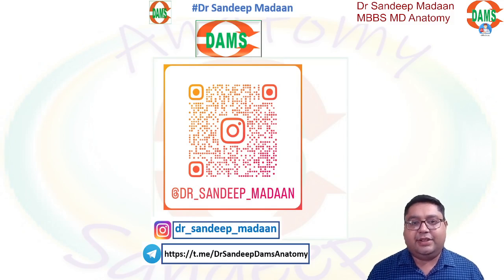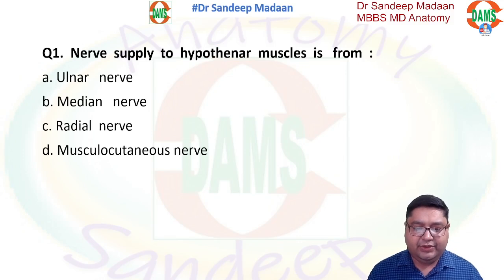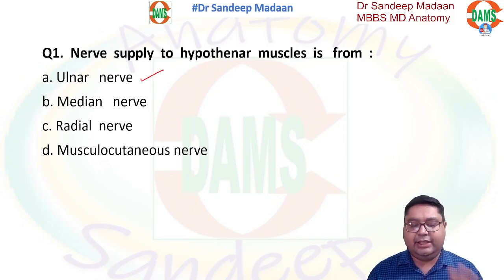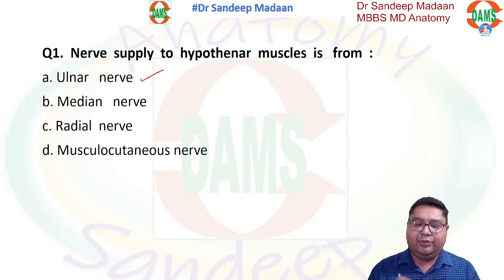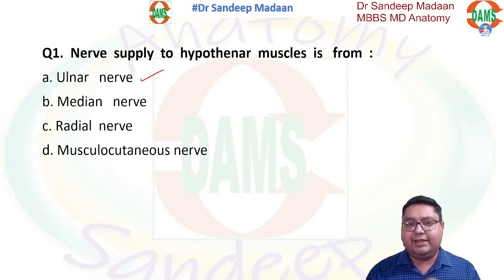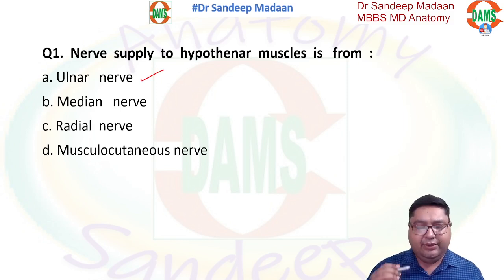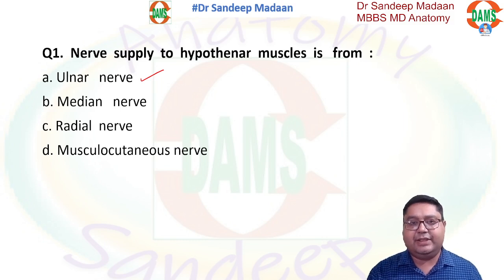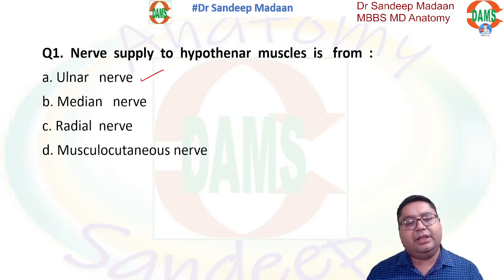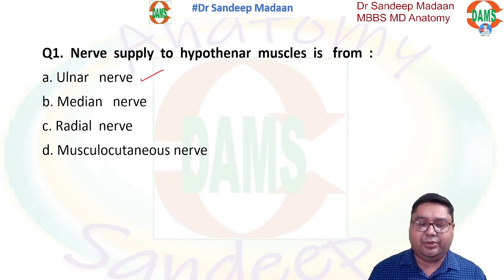Hello everyone, let us now discuss anatomy questions. The question is: nerve supply to the hypothenar muscles. The straightforward answer is ulnar nerve, because in the palm all muscles are supplied by the ulnar nerve except a few muscles which are supplied by the median nerve. Those muscles are mainly on the thenar side: abductor pollicis brevis, flexor pollicis brevis, and opponens pollicis, along with the first and second lumbricals. Except for these five muscles, whatever muscles are asked in the palm will be supplied by the ulnar nerve.